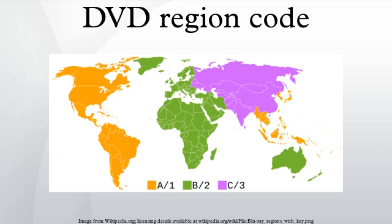Most freeware and open-source DVD players, such as VLC, ignore region coding. VLC, for example, does not attempt to enforce region coding. However, it requires access to the DVD's raw data to overcome CSS encryption, and such access may not be available on some drives with RPC-2 firmware when playing a disc from a different region than the region to which the drive is locked. Most commercial players are locked to a region code but can be easily changed with software. Other software, known as DVD region killers, transparently remove the DVD region code from the software player. Some can also work around locked RPC-2 firmware.